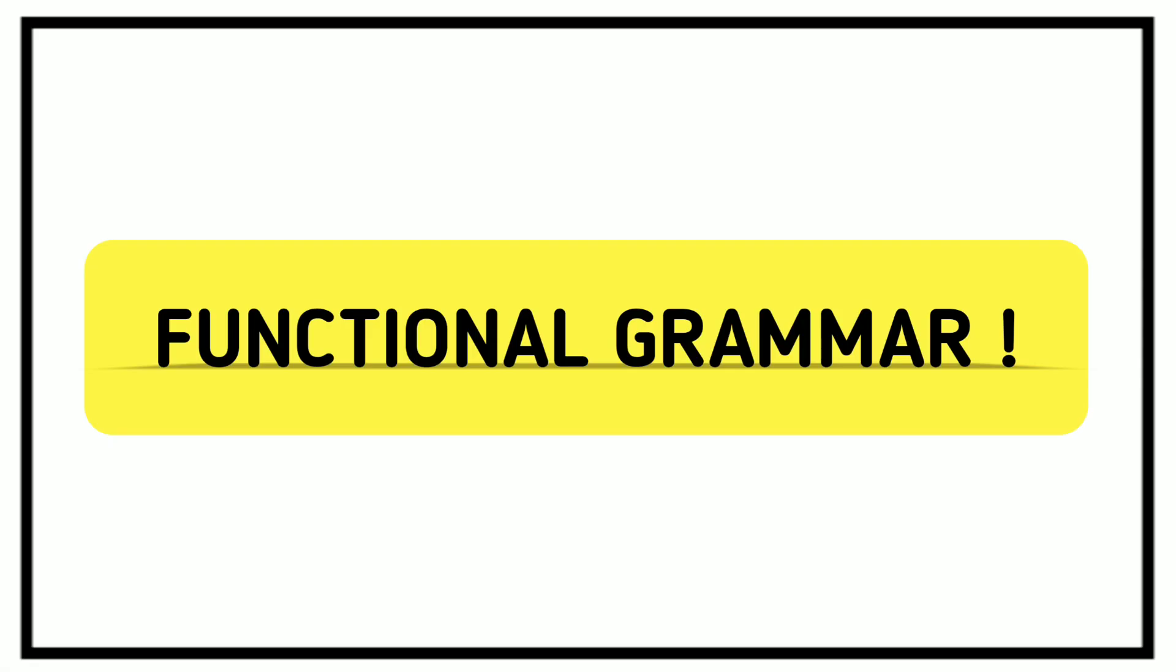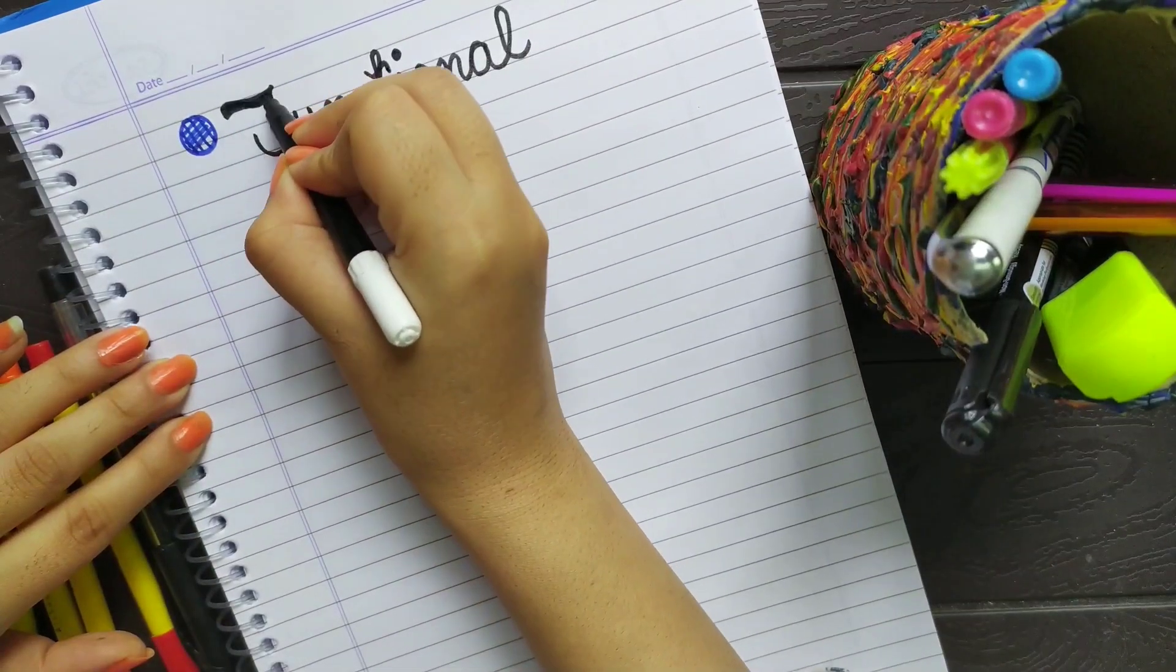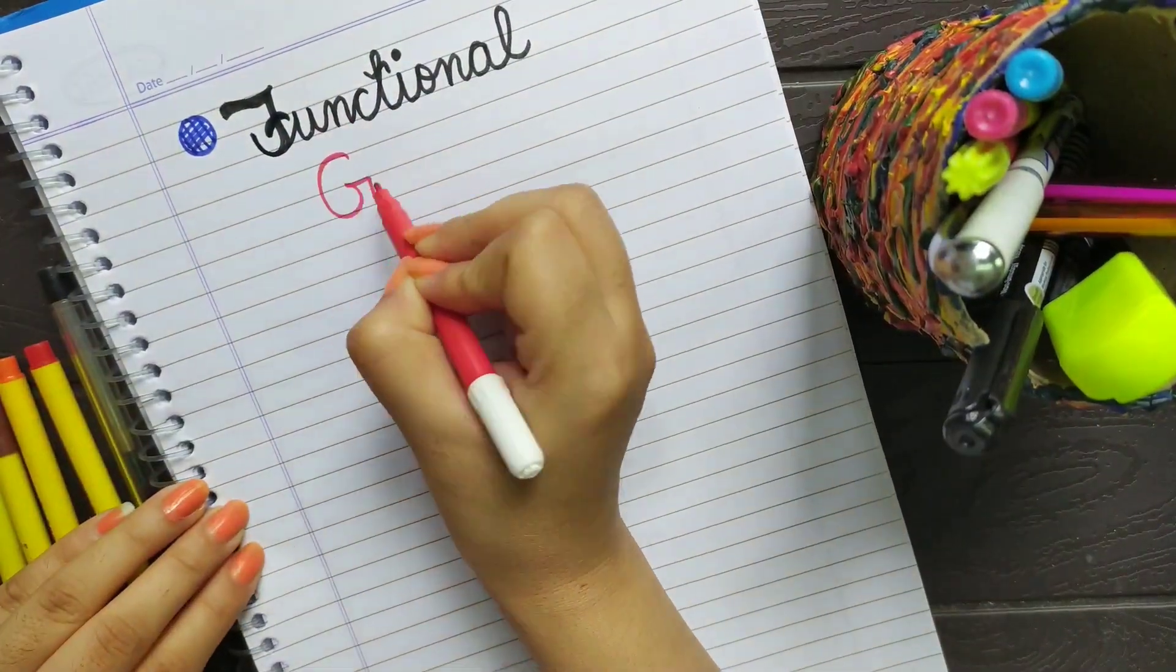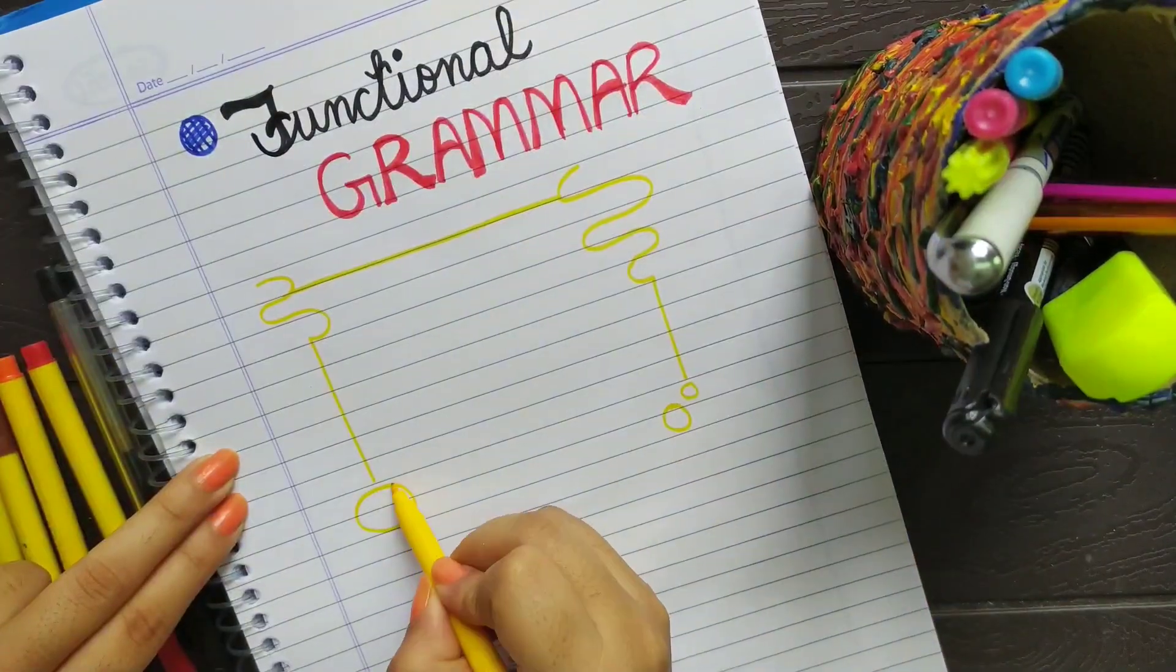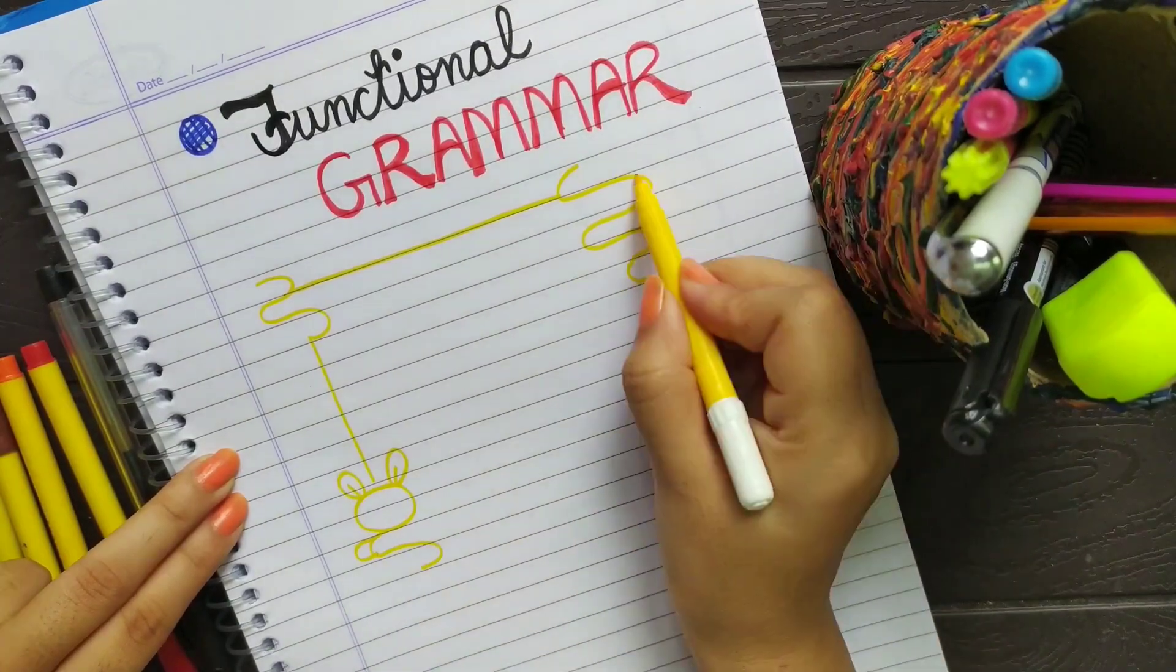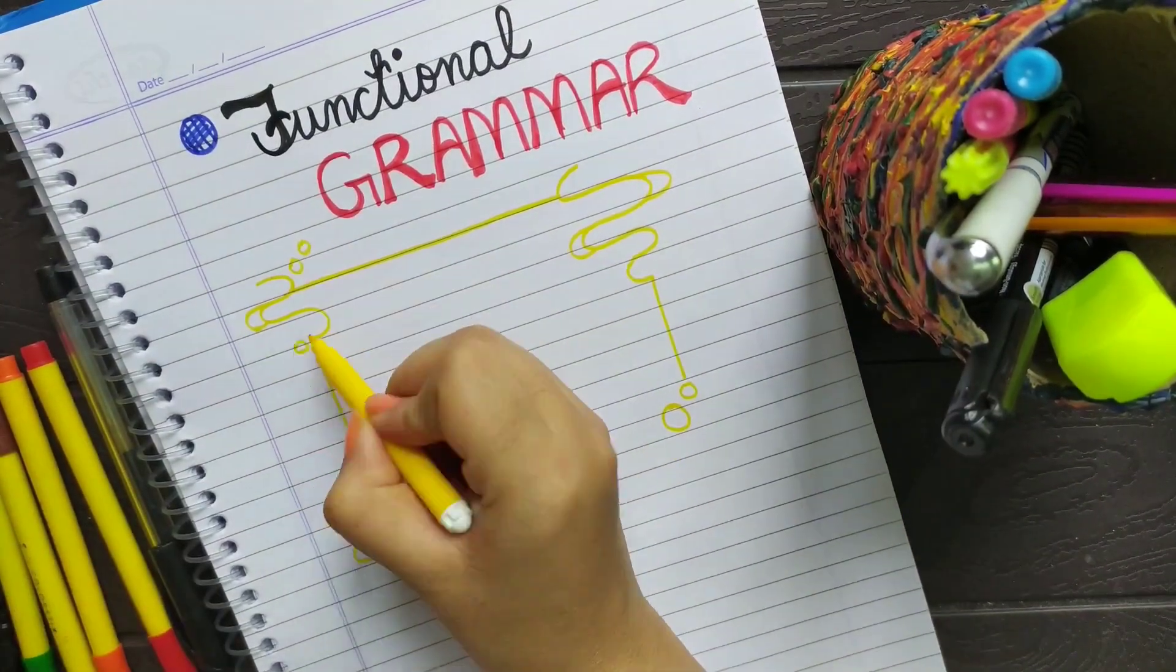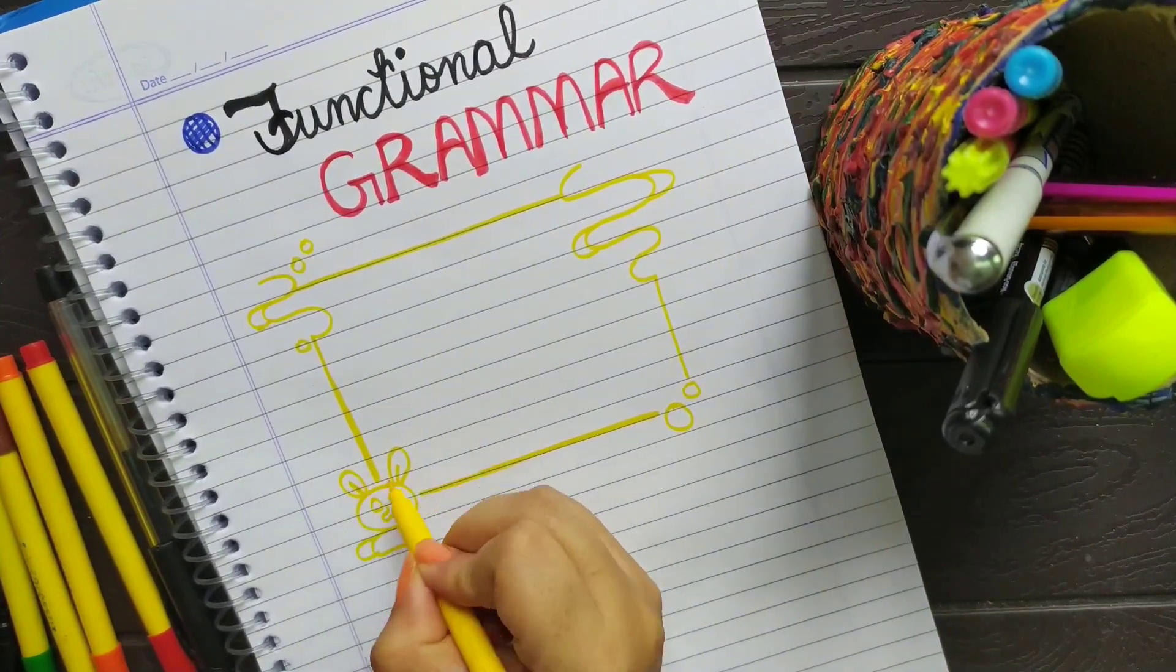Speaking English seems difficult only up to the time period when you do not have an exact idea on how to express your thoughts precisely. Learning soft skills has a great relationship with functional grammar. Now what is functional grammar?